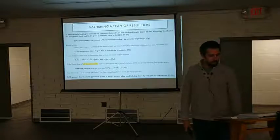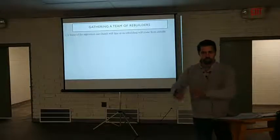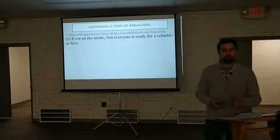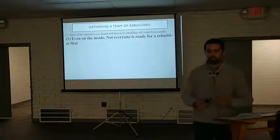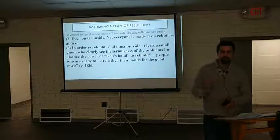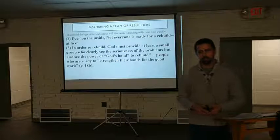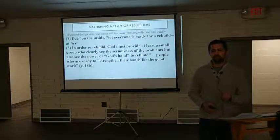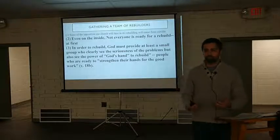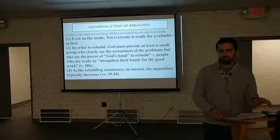Nehemiah appeals to the one place that really is power. Now we can talk about some specific applications for us. We already looked at opposition from outside. But even on the inside, not everyone is ready for a rebuild at first — this is why Nehemiah only takes a few people with him. Not everybody's ready for the work, and in some ways that's okay; we're all at different levels spiritually. Number three: in order to rebuild, God must provide at least a small group — and that small group must clearly see the seriousness of the problems but also see the power of God's hand to rebuild. They must be people who are ready, according to verse 18, to strengthen their hands for the good work. And number four: as the rebuilding commences in earnest, the opposition typically increases. We'll see it heat up throughout the book.